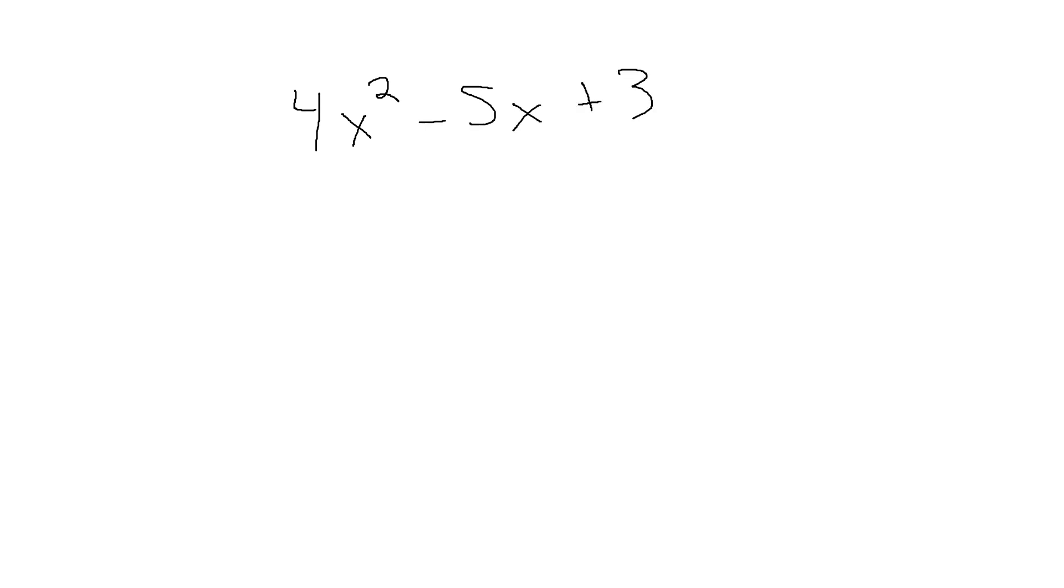So your textbook is already going to present it like this. It's already going to be written vertically. What you're going to have to pay attention to is if there's a minus outside, I need to change the sign. So this minus is going to affect everything inside of this parenthesis. There's nothing outside on the top. So it's going to stay.